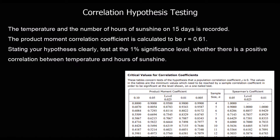In this video we're looking at correlation hypothesis testing. We're going to be given a product moment correlation coefficient, which tells us whether we've got a positive or negative correlation. It goes between minus one, which is a strong negative correlation, up to plus one, which is a strong positive correlation, and zero in the middle means there's no correlation.